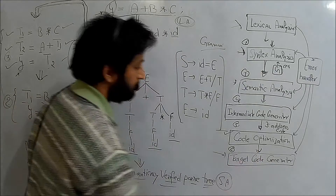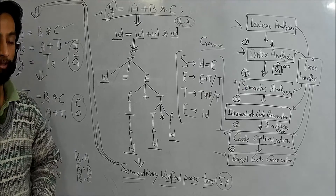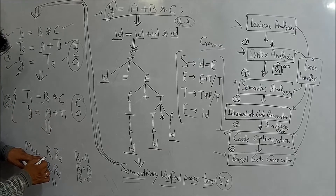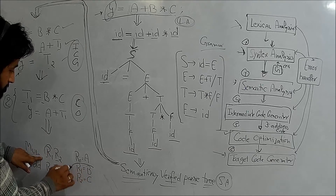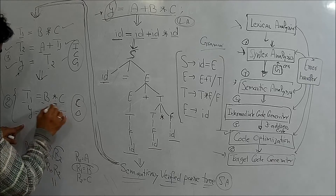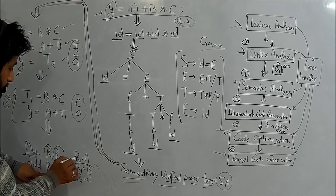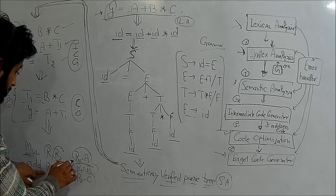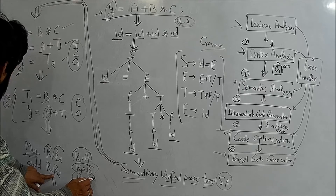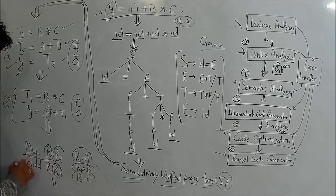After the code optimizer, we have the target code generator. The responsibility of the target code generator is to generate language understandable to the assembler. For example, it generates instructions like multiply R1 and R2, where R1 holds B and R2 holds C, and add R0 and R2, where the result is stored in the appropriate register.